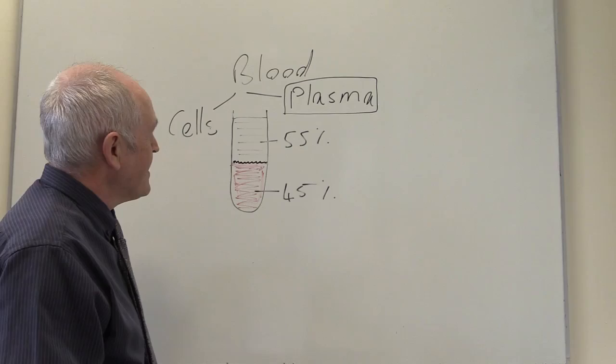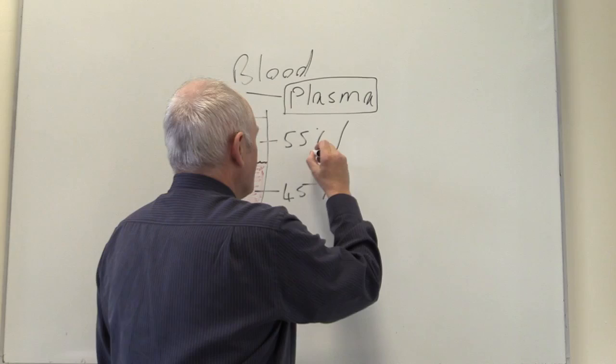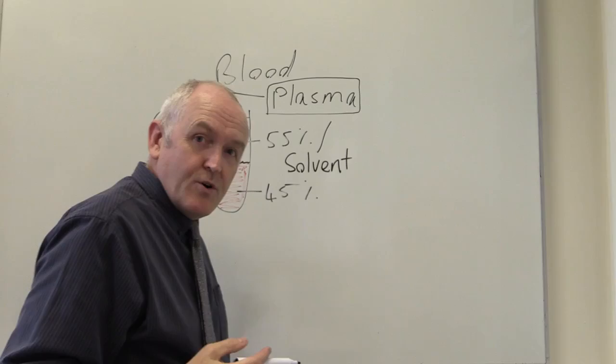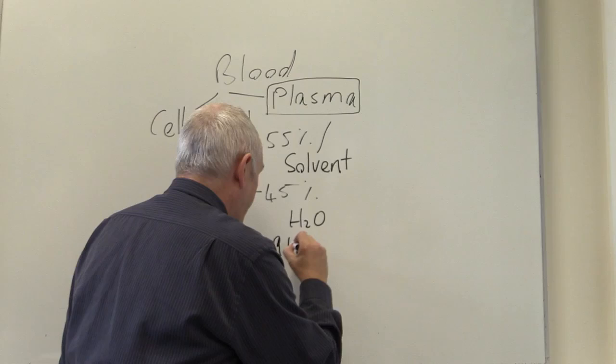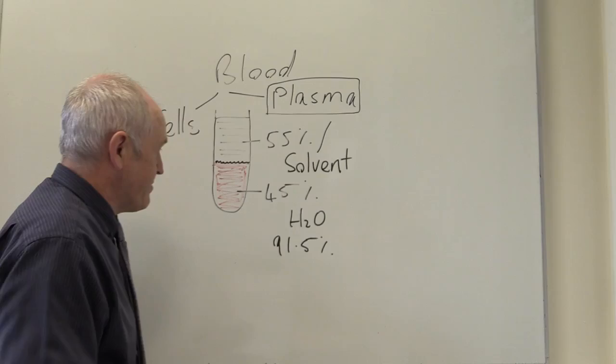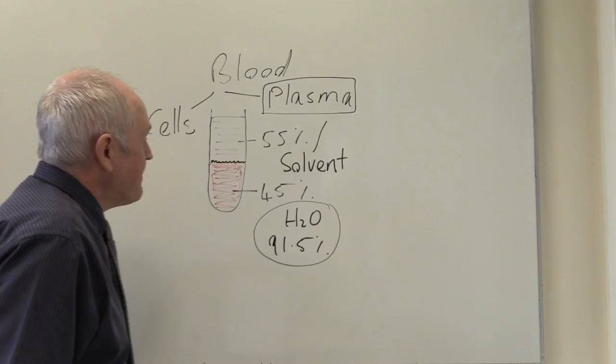The amount of blood that is red cells we term the hematocrit — the proportion of the blood that is red cells. Now we want to look particularly at the plasma, which contains a solvent. In plasma, the solvent is water, and about 91.5% of the plasma is water. The other part is the solutes.